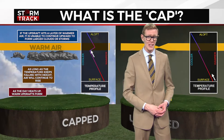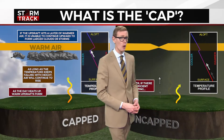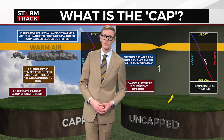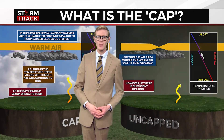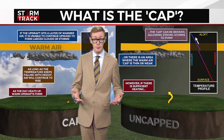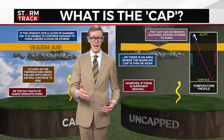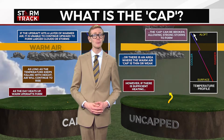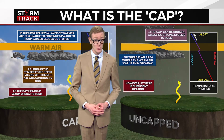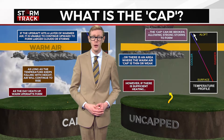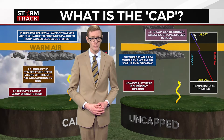However, if there is sufficient heating, or if the warm layer is thin or weak, the cap can be broken. When that happens, the updraft can continue to grow and strong thunderstorms can form.